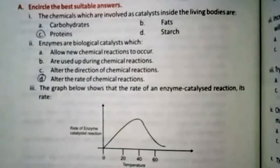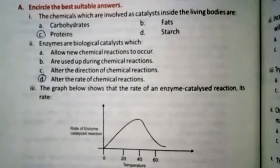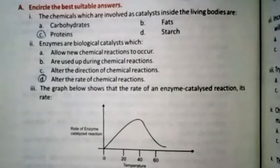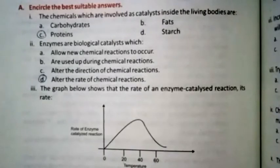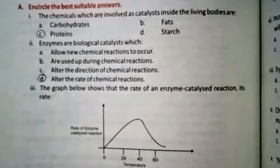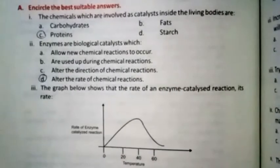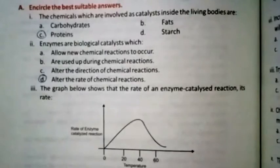Question three: The graph shows the rate of an enzyme-catalyzed reaction. The right option is C — rate increases with temperature up to a maximum of 40 degrees centigrade.